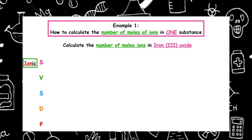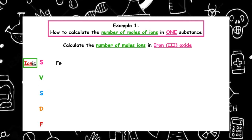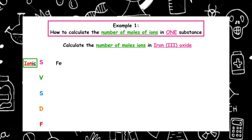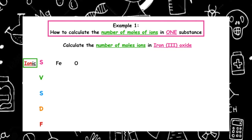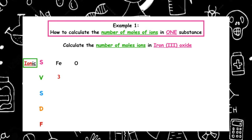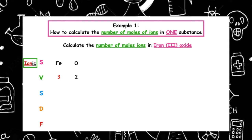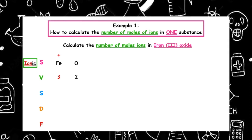We start off with our SVSDF. The symbol for iron is Fe, and the symbol for oxygen is O. The valence is given in the question for iron, which is 3, and the valence of oxygen is 2. Metals always lose electrons to form positive ions, so the non-metal will be a negative ion.